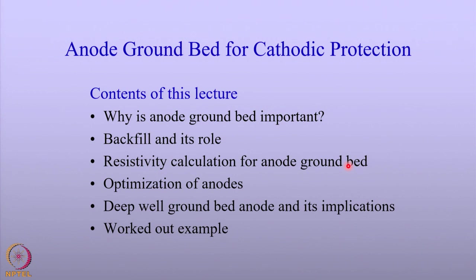The content of this lecture is listed here. We will start with highlighting why one should worry about anode ground bed, the role of backfill and its location. We shall then talk about backfill and its role. The resistivity of the anode ground bed is very important; we should look at the governing equations to calculate the resistance of the anode for current flow. And then we will move on to optimization of the anodes.